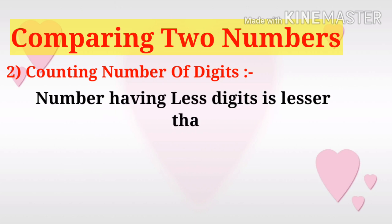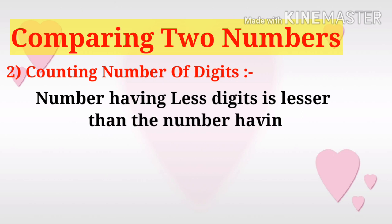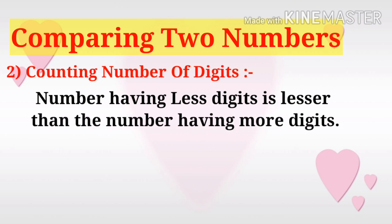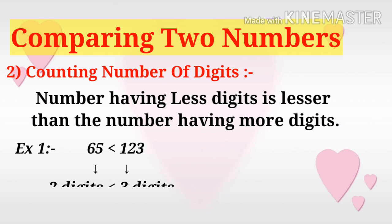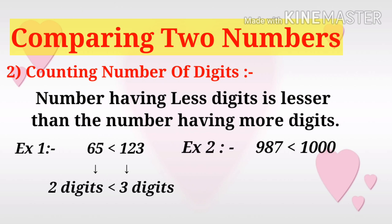A number having fewer digits is lesser than a number having more digits. For example, 65 is less than 123 because 65 has two digits and 123 has three digits. Also, 987 is less than 1000 because 987 has three digits and 1000 has four digits.